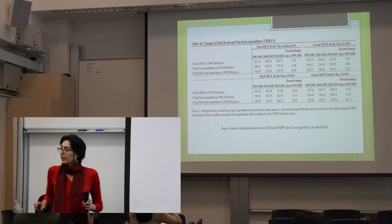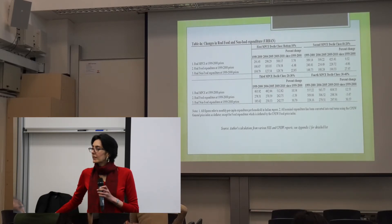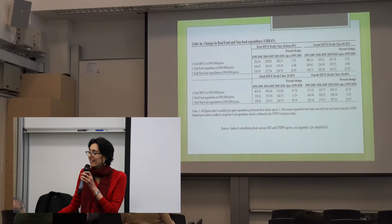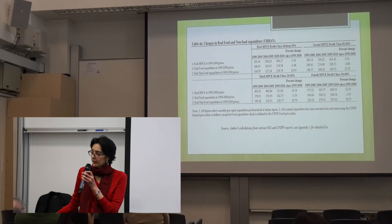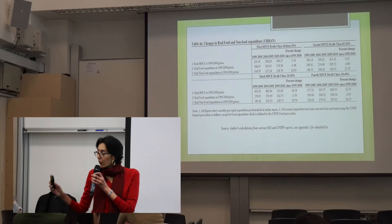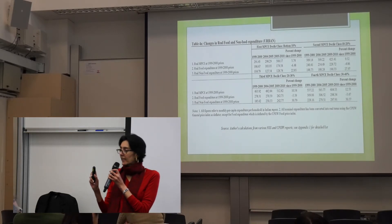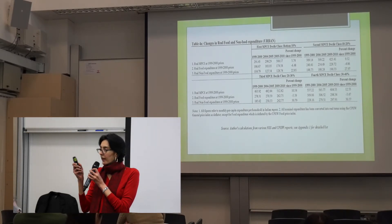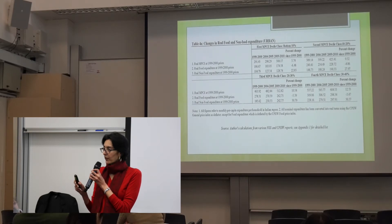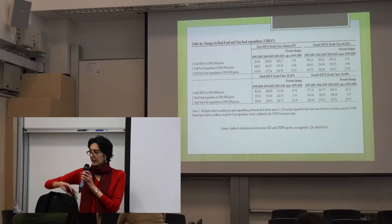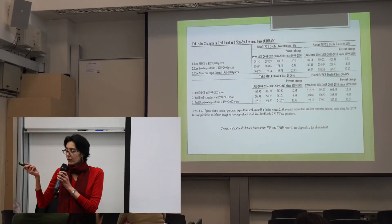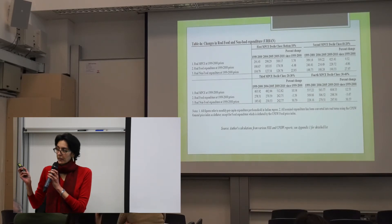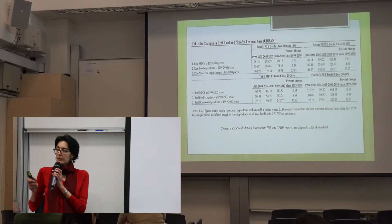Q: There's also a question in the NSS about whether you can afford two square meals a day — I was wondering what happens to the answer to that question over time. A: I think over the years, the percentage of households saying that they could not afford three square meals a day has gone down. So the 2009-10 report's overall summary indicates fewer of them are saying that they can't afford two or three square meals — fewer of them are saying they cannot, over the years.